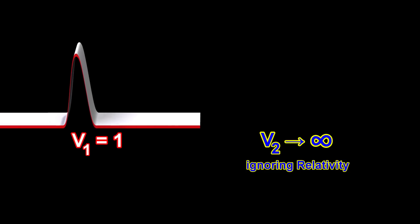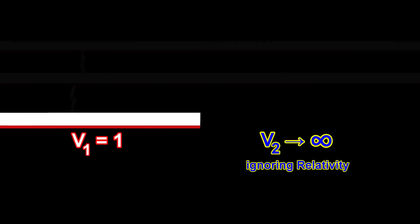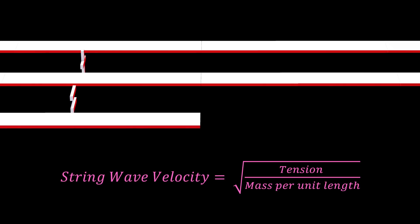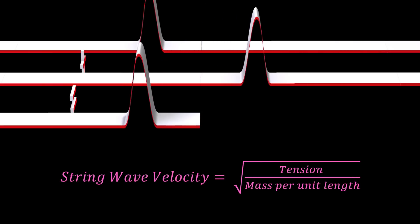If we ignore Albert Einstein's theory of relativity and just use classical physics, then as V2 approaches infinity, we approach the situation we had when there was nothing connected on the right side. For the velocity in the blue material to approach infinity, its mass density needs to approach zero. If the mass density of the blue material is zero, then this is the same thing as there being nothing connected on the right side.